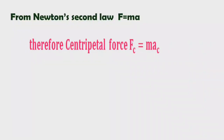From Newton's second law, F = ma. Therefore, centripetal force Fc = mAc. Since AC = v² / r, substituting gives Fc = mv² / r. So the formula for centripetal force is Fc = mv² / r, where m is the mass of the object revolving in the circular path.